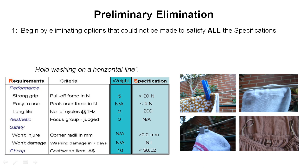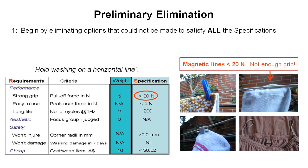So the first thing we're going to do is look at any of our options that will not satisfy those specifications. If we take a close look at the magnetic line option and do some calculations, testing, or research, we might find that our magnetic lines might not be able to produce 20 newtons of grip. If they're below that, they're going to fail on this very important specification, and so we can eliminate them from our possible solutions.